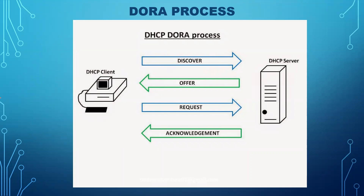This is the diagram for the DHCP DORA process. This is our client machine or host machine, and this is the DHCP server. Whenever the client machine is requesting something, that would be in the Discover message — that is the first message.